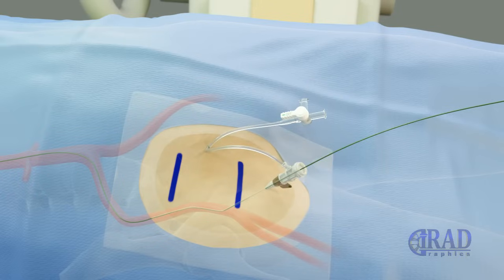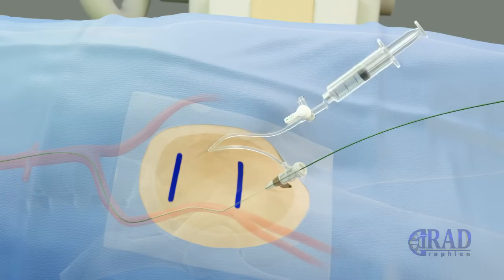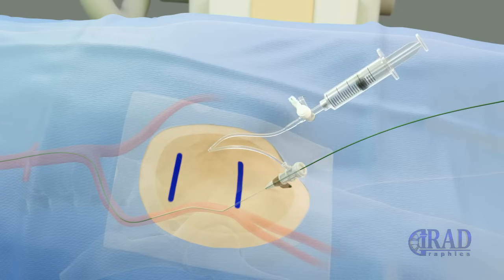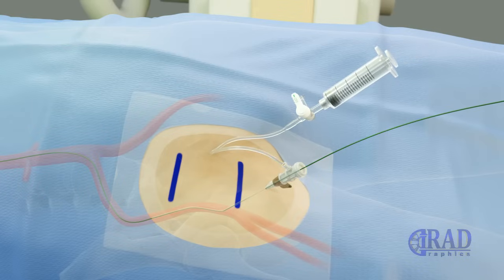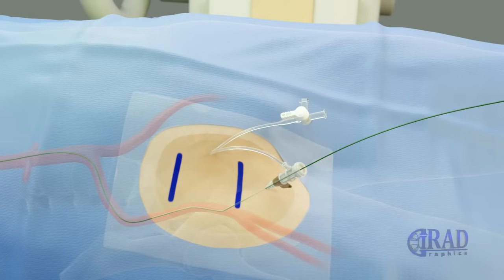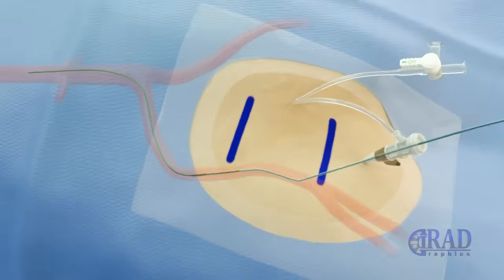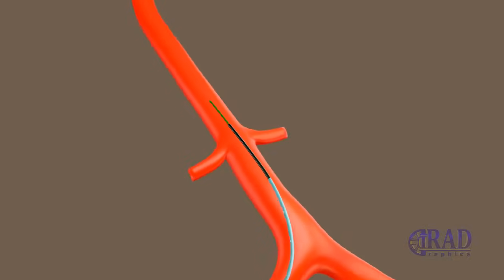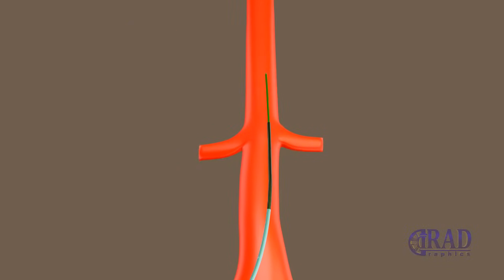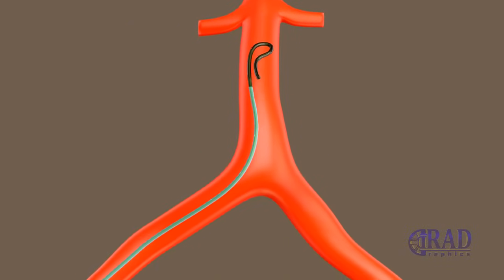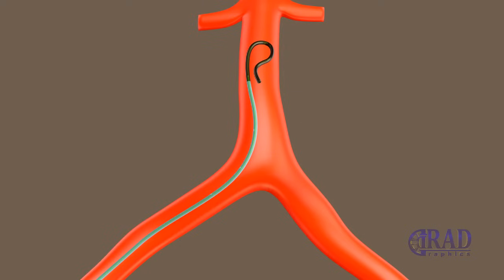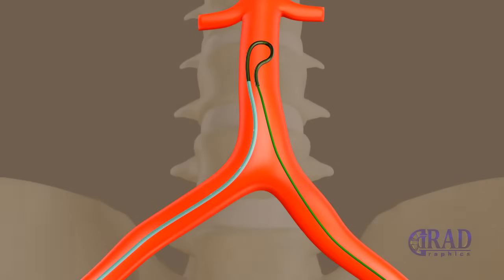The dilator of the vascular sheath is removed. The sheath is aspirated and flushed with heparinized normal saline. A curved catheter is advanced over the wire through the sheath into the lower aorta, and subsequently the tip is formed by pulling back the wire. Then the wire is re-advanced, and this combination is used to select the contralateral common iliac artery.